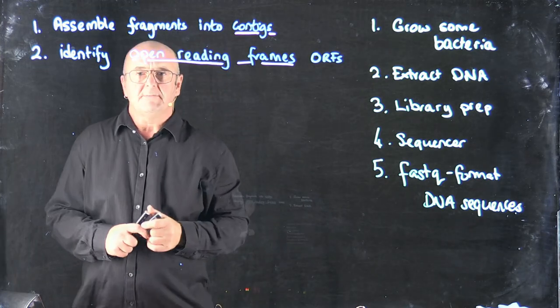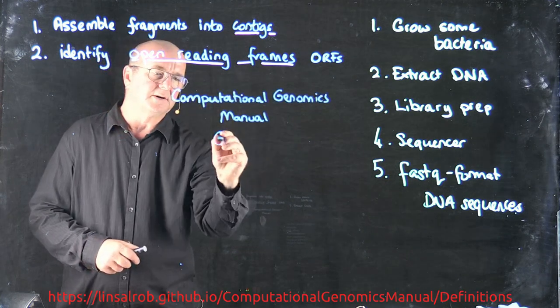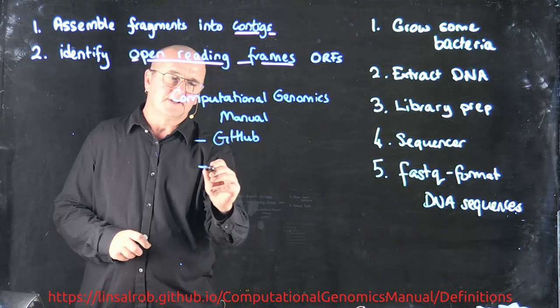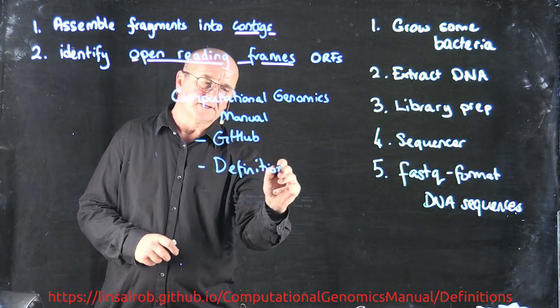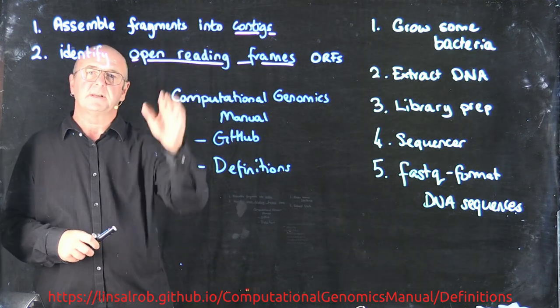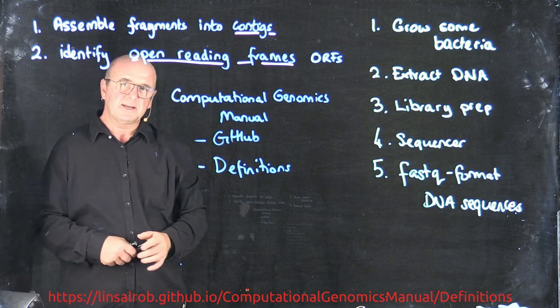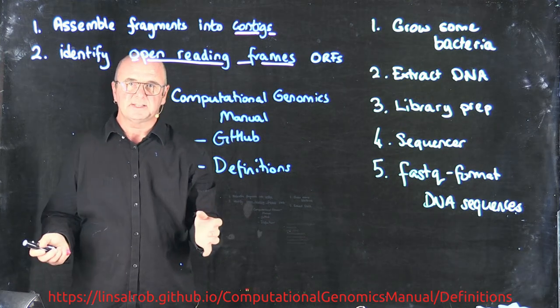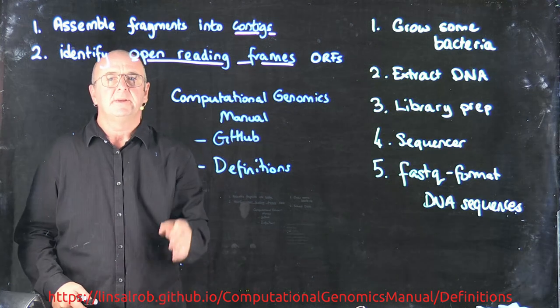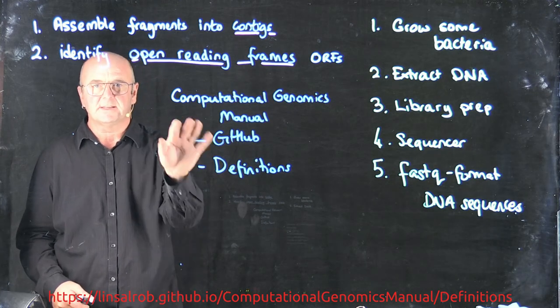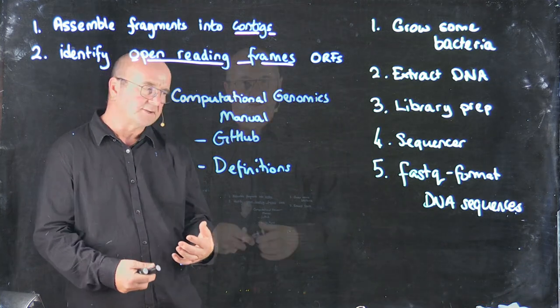Just as a reminder, if you look at the computational genomics manual, which is on GitHub, there's a page of definitions. So if I throw out words like contigs or open reading frames or pegs or polypeptides, and you think, what on earth is he talking about, you can go to the computational genomics manual and take a look at the definitions of the terms I'm going to use as we're talking about sequence technology.